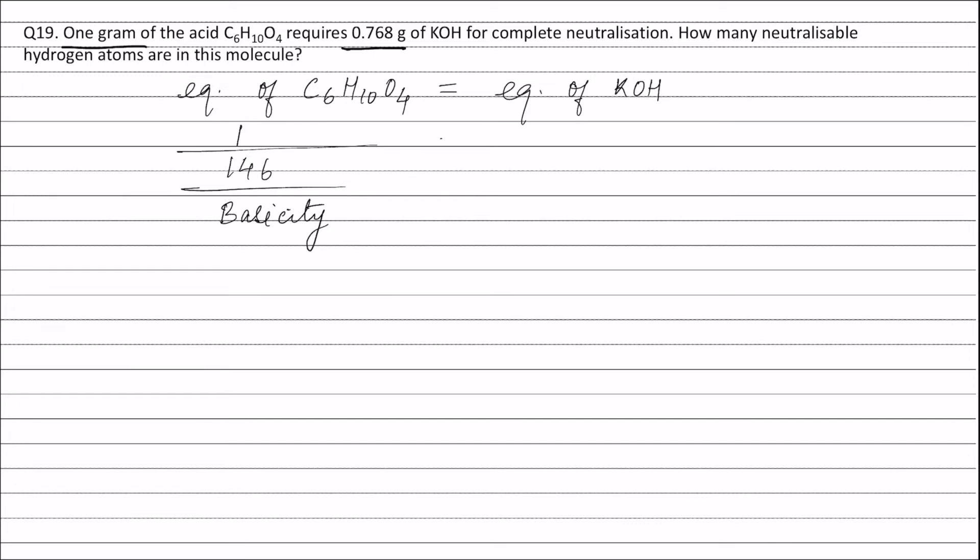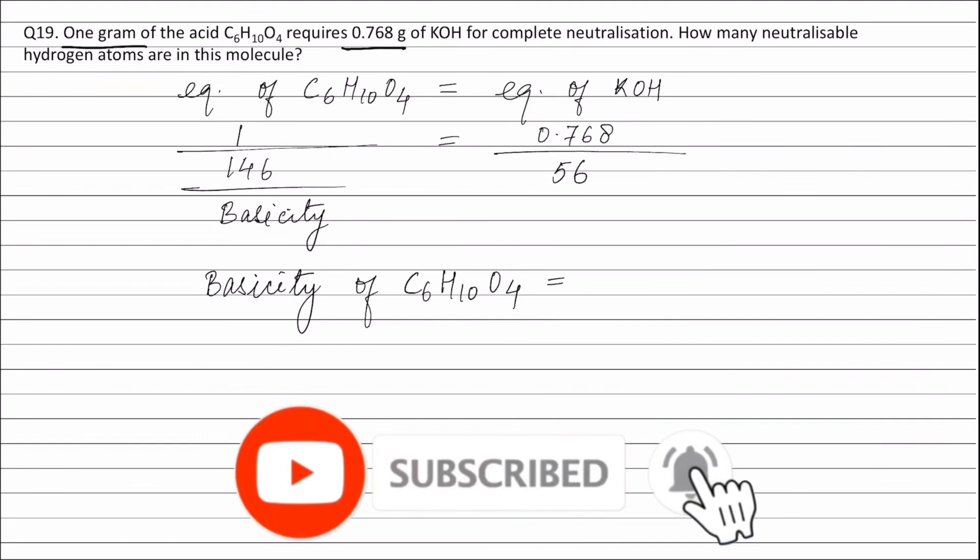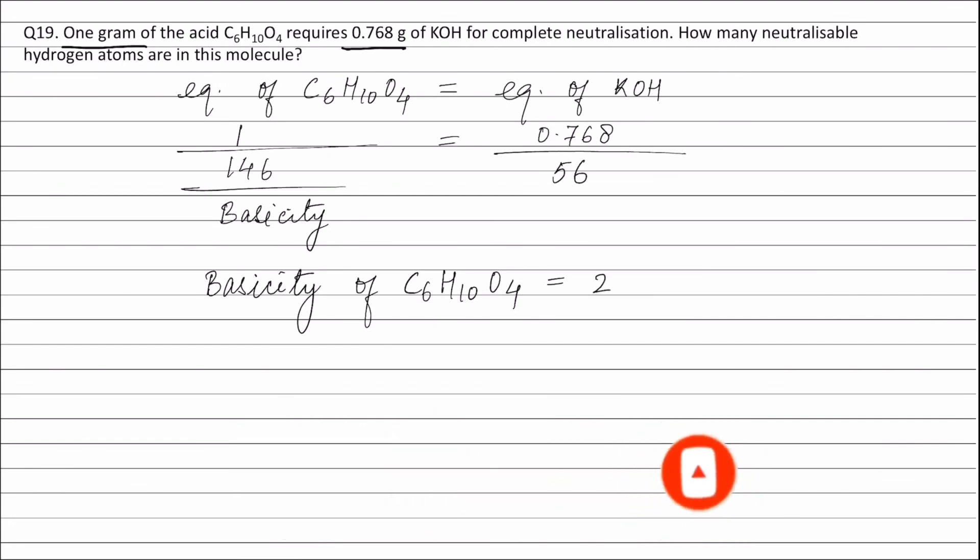And this is equal to weight of KOH, that is 0.768, divided by equivalent weight of KOH, that is 56. Therefore, basicity of C6H10O4 is equal to 2.